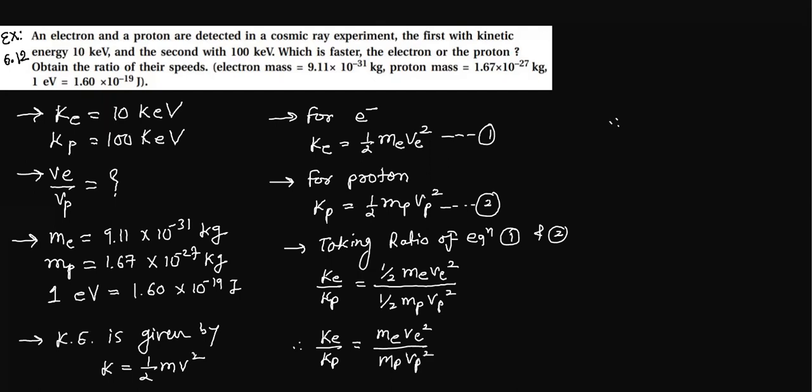So here I will write VE upon VP squared, and take that out to get VE by VP equals square root of KE MP divided by KP ME.